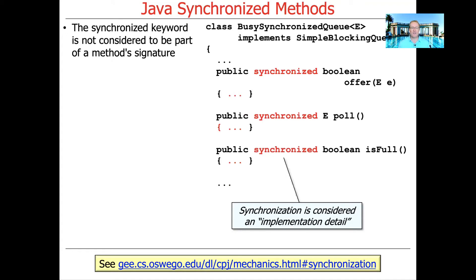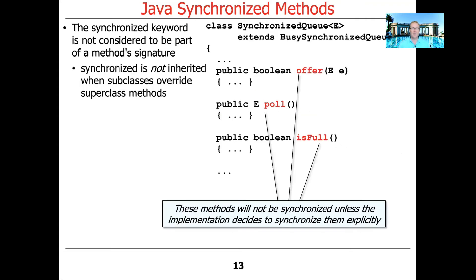Interestingly, the synchronized keyword is not considered part of the method's signature — it's considered an implementation detail, and this really plays in with inheritance. You don't inherit synchronization. So if you subclass from a class, say another class called SynchronizedQueue that extends BusySynchronizedQueue, those methods will not be synchronized by default unless you, the subclass programmer, explicitly decide to synchronize them. That's a little bit of a quirk, but that's the way things work.